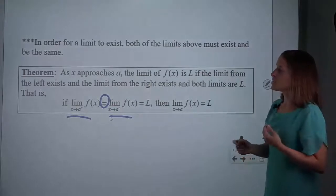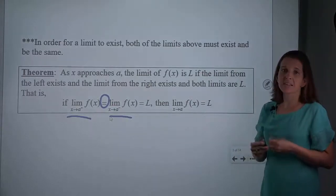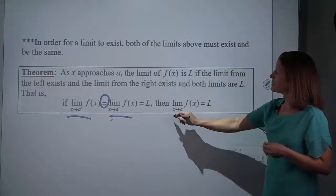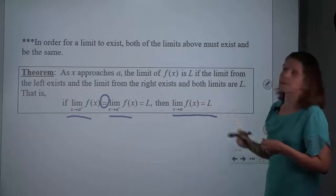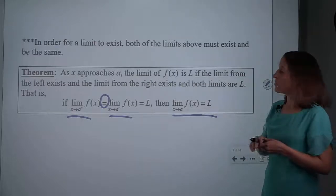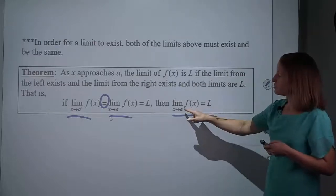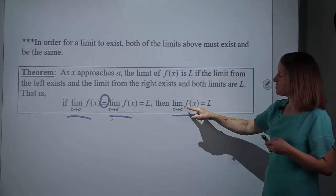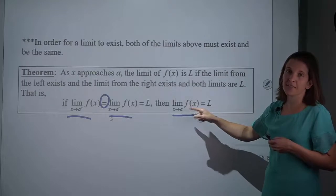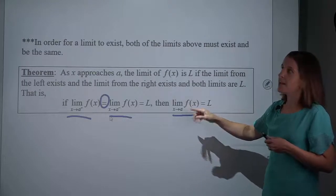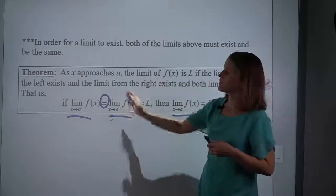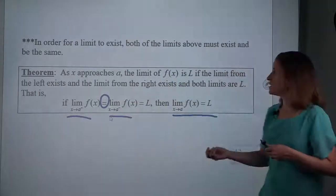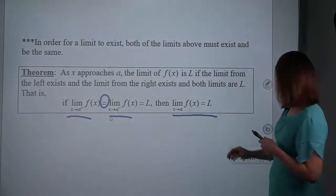So we're actually going to have a hidden three-step problem anytime we're asked for the regular limit without a superscript on it. This notation means from the left and from the right, and we have to go and check from the left, check from the right, and verify that those equal each other.